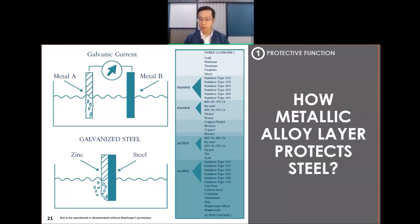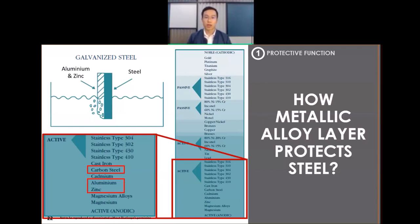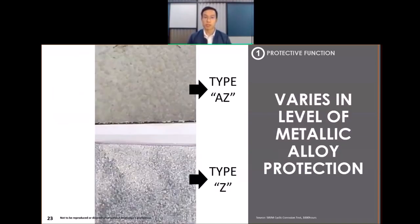Carbon steel, aluminium, and zinc are positioned quite close to each other on the galvanic table, with aluminium and zinc on the more active side. This means aluminium with steel, aluminium-zinc with steel, or zinc with steel would provide galvanic protection to the steel base.